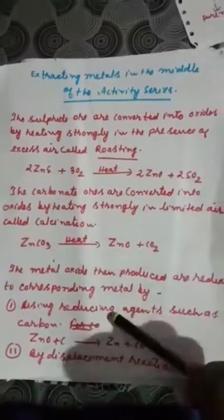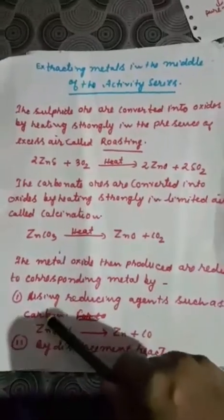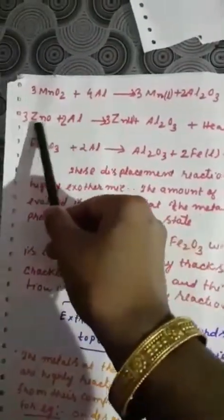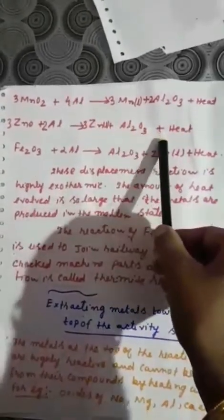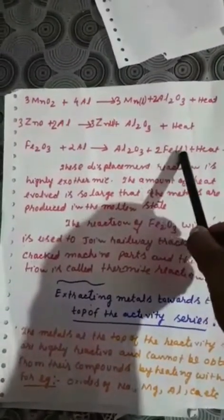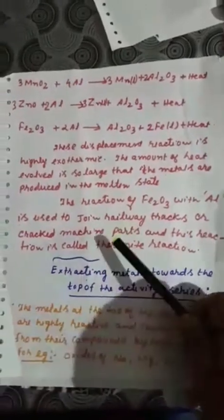If carbon is not available, we can also perform a displacement reaction — displacing the metal using a more reactive metal. For example, aluminium is more reactive than zinc or iron, so aluminium can reduce these metal oxides. This reaction is highly exothermic. The amount of heat evolved is so large that the metal produced is in the molten state — iron in liquid state, zinc in liquid state, magnesium in liquid state.